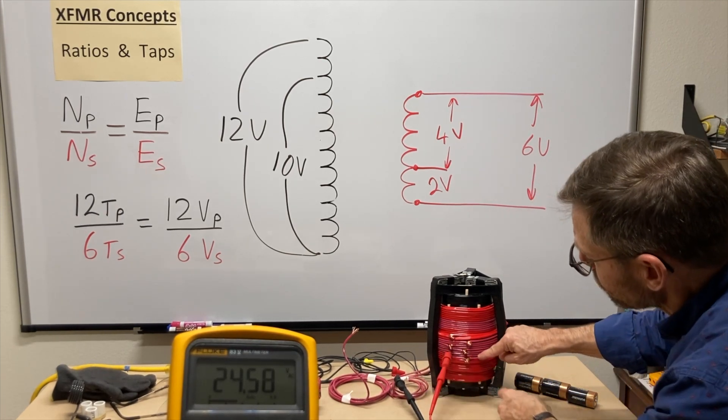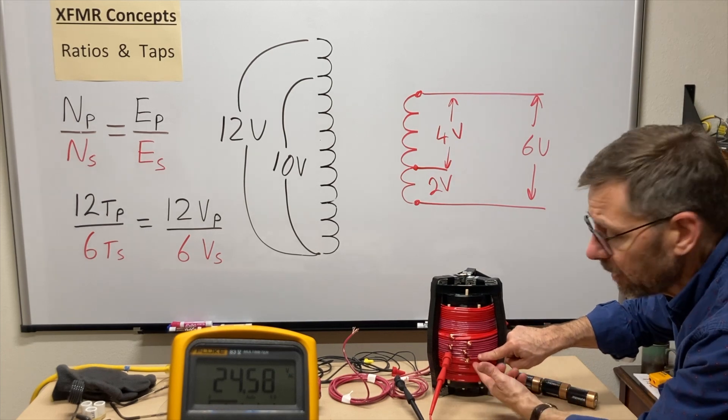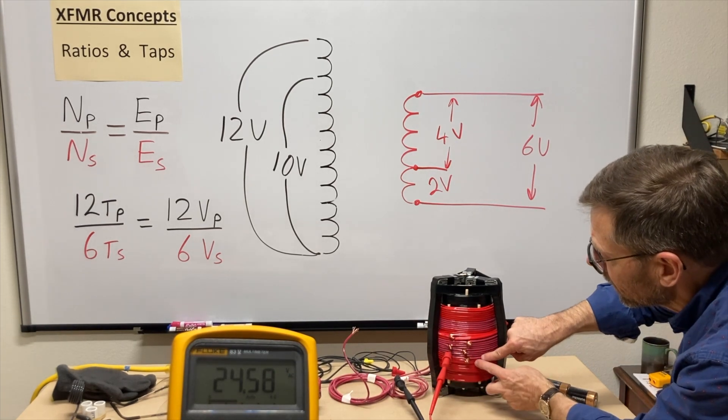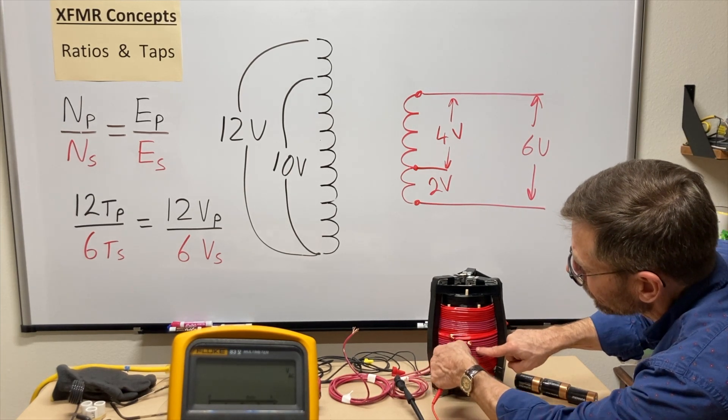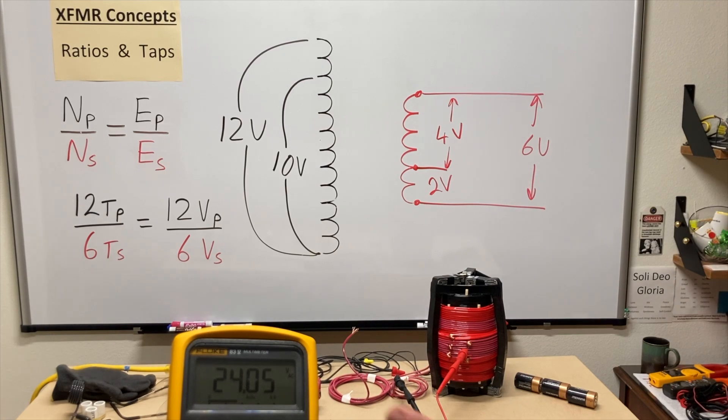Okay, that's good. I'm getting closer. I'm dropping off two turns. So sure enough, that half a volt means that they're a quarter of a volt per turn. Let's drop off two more turns and there we are. We're pretty close. 24.05.